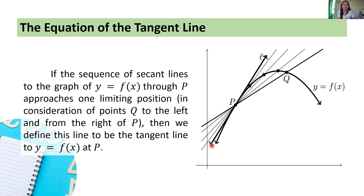And if we recall, in geometry, we define the tangent line as a line intersecting the circle at exactly one point. So that is somewhat similar to our case here when we have a curve.